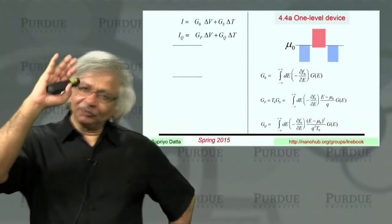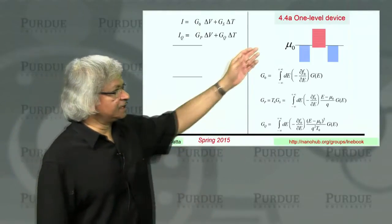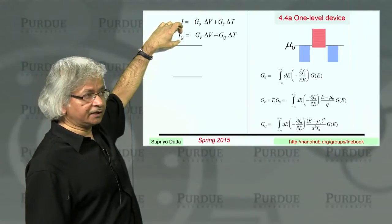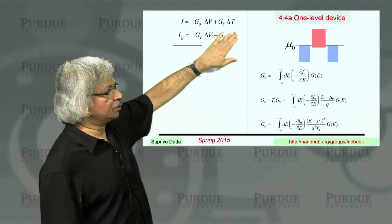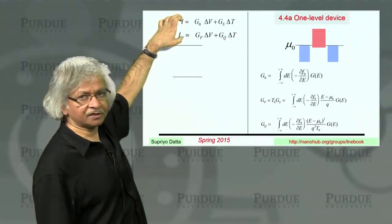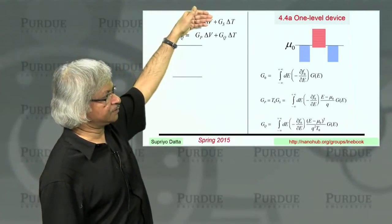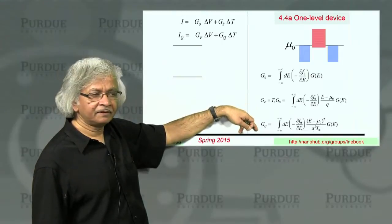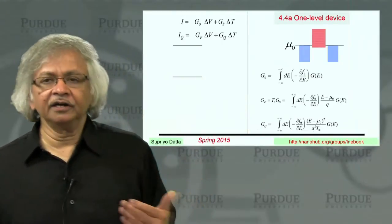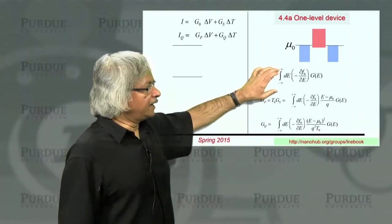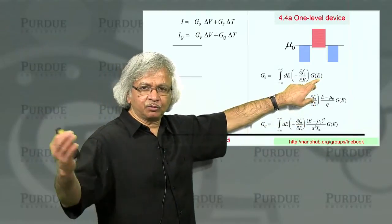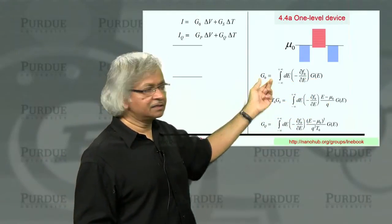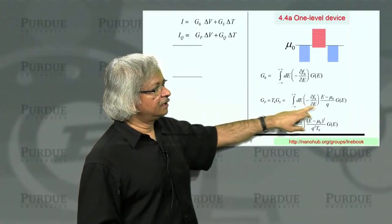Just to remind you what we have done in the last two lectures, we considered a device with a continuous distribution of levels and reintroduced heat current. We then went to low bias, low temperature difference, this linear response regime, and had these linear equations of thermoelectricity: the charge current and the heat current in terms of the voltage and the temperature.